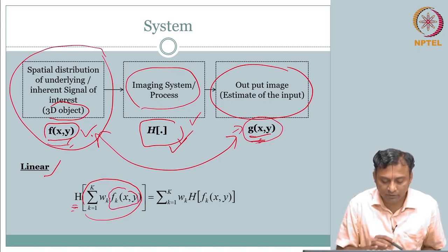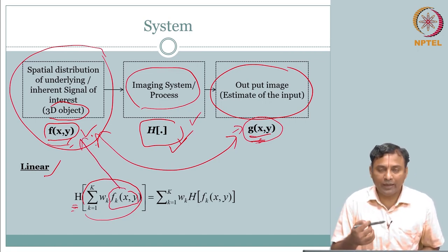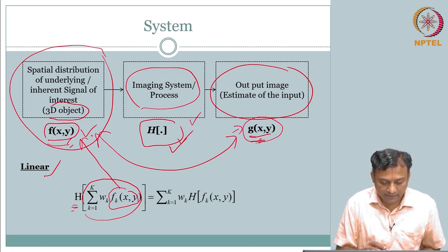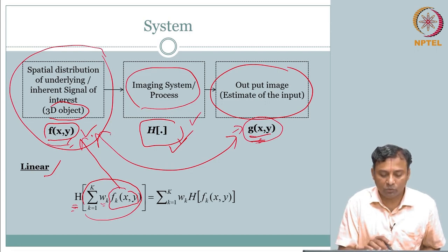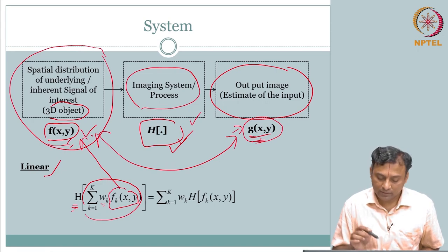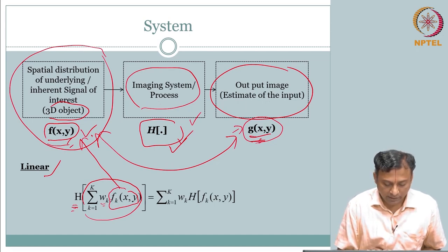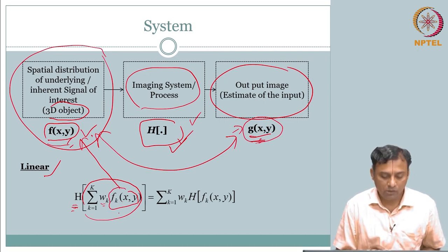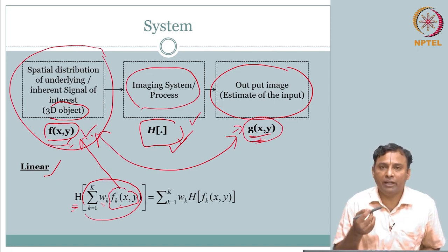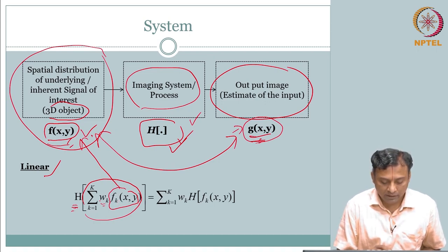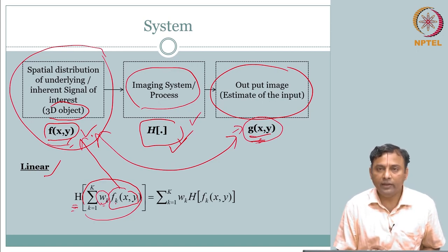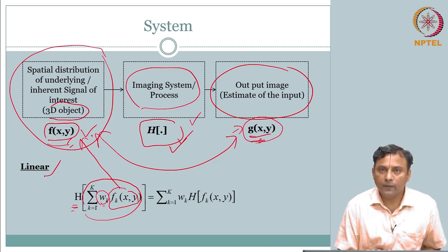We know f(x,y) - that is our input. If you give f(x,y) to system h, if h operates on f(x,y), you get an output g(x,y). Now what if the input is not one function but a weighted sum of several inputs - f_k(x,y) - each with their own weight w_k? These are different input functions: f_1(x,y), f_2(x,y), and so on. If you pass that weighted sum through the system, what is the output?